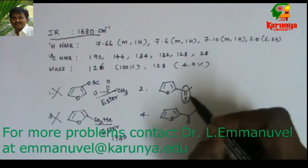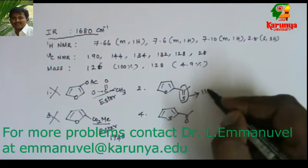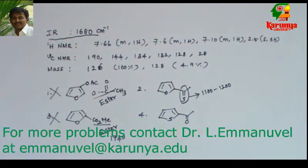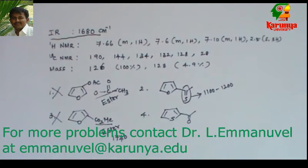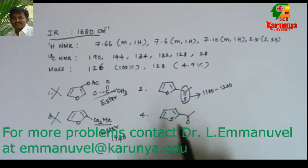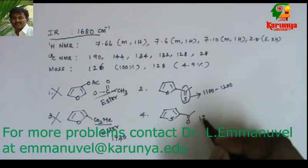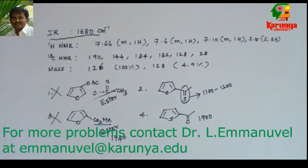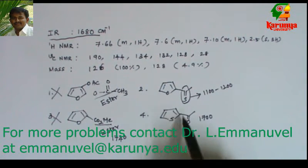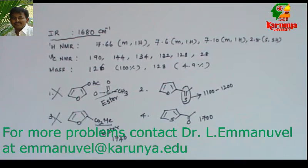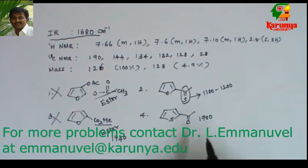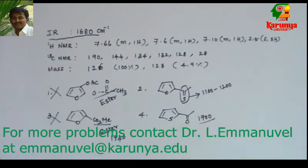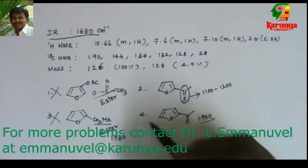If you know the IR frequency for thioketone, you can solve this. The IR frequency for thioketone will be around 1100 to 1200. Ketone generally appears at around 1700, and it may vary plus or minus 20 to 30 depending on the substituents attached. This value of 1680 is very close to 1700, so this should be the answer — it is a ketone.